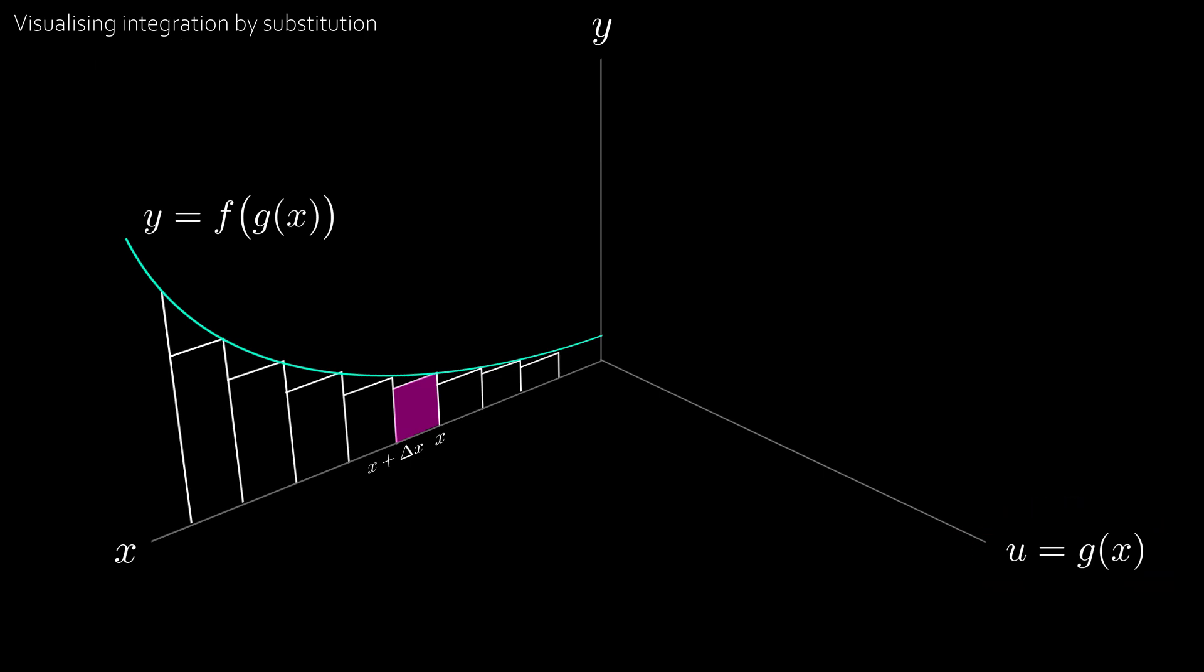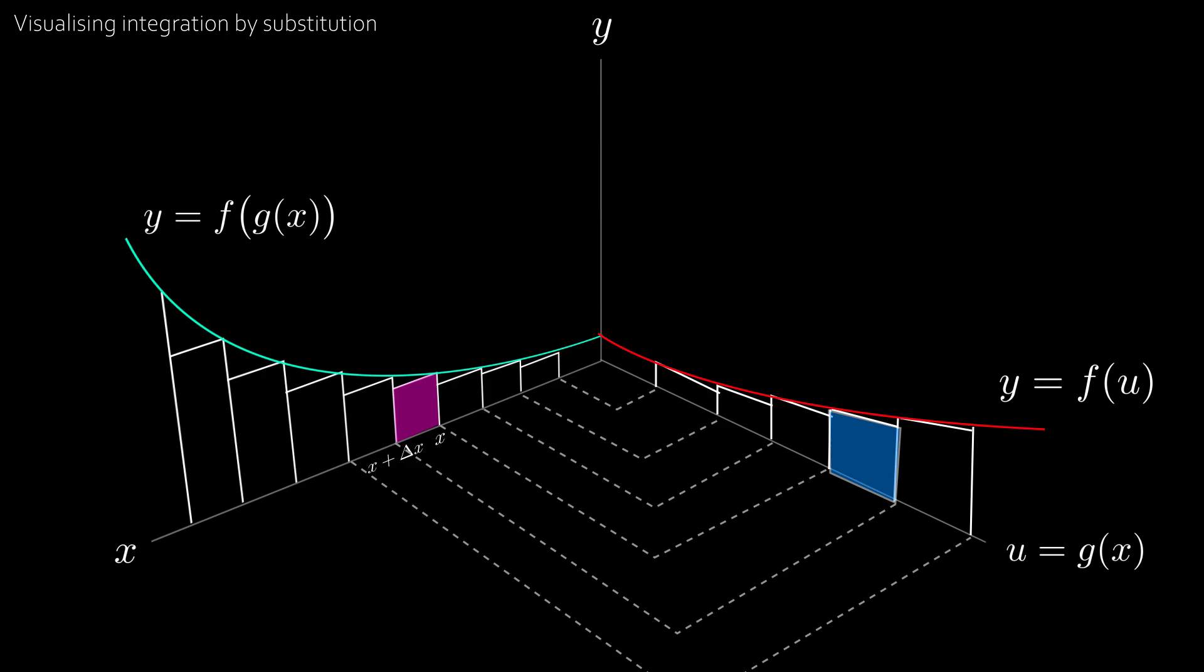For example, if g of x equals x squared, and say when x equals 2, y equals 3, then when u equals 2 squared, or 4, then y is also equal to 3. Notice how the y coordinates are exactly the same, but x and u are different. We can fill all the coordinates of the graph like this, giving us y equal to f of u.